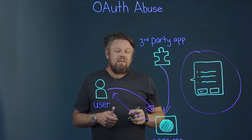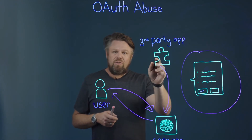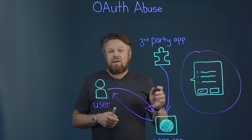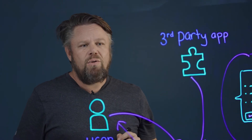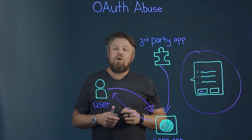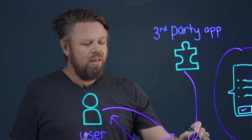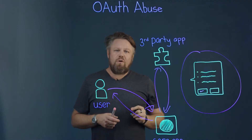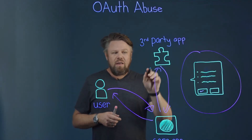Another possibility is that an attacker can convince a user through a very simple phishing campaign to authorize a malicious application. That application just needs to connect to the core application — and now the attacker has the ability to stay inside your environment for a long period of time. As data flows through this third-party application, it's not occurring through your network or your control framework. You don't know what data is flowing out of your organization. That's a critical problem.